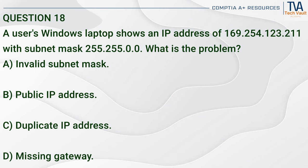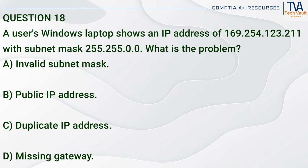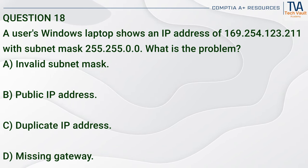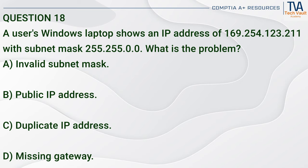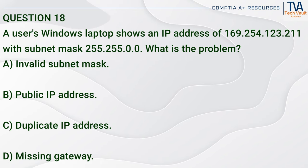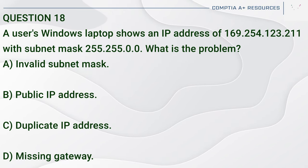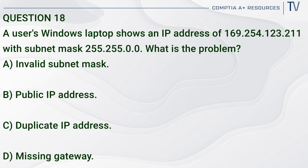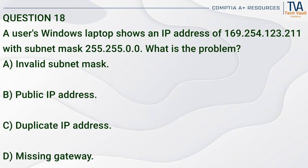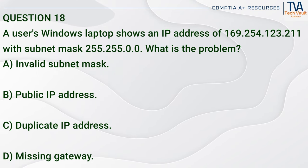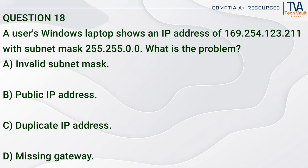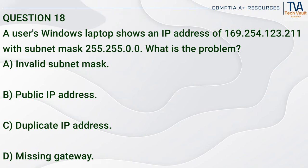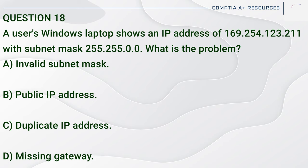Question 18. A user's Windows laptop shows an IP address of 169.254.123.211 with subnet mask 255.255.0.0. What is the problem? A. Invalid subnet mask. B. Public IP address. C. Duplicate IP address. D. Missing gateway.